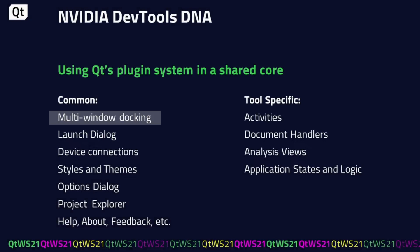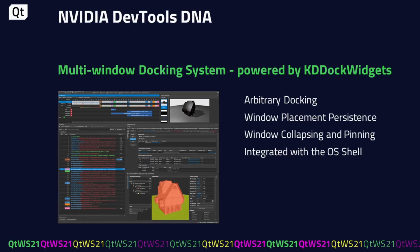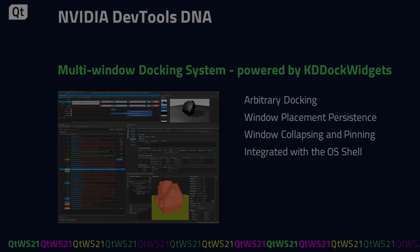A major advantage of this is maintaining a similar look and feel across these fundamentally different but related tools. In the past we had built our own docking system, but it was majorly limited. Recently we decided to switch to using KDE dock widgets from KDAB. This powerful docking system provides all of the docking primitives that we need in order to allow our users to customize their layouts as they please. Being able to leverage a well-tested, robust, and industrial-strength docking system that is maintained by the expert Qt developers at KDAB has been a tremendous boon for us and our users.